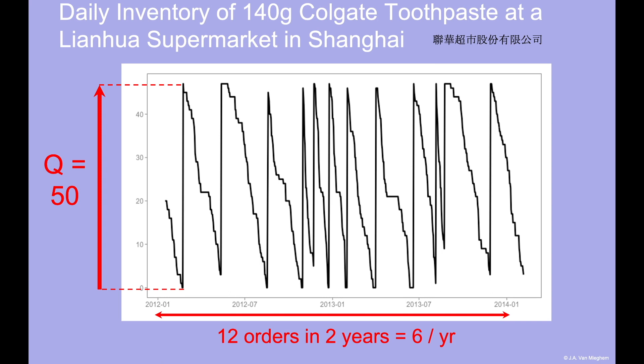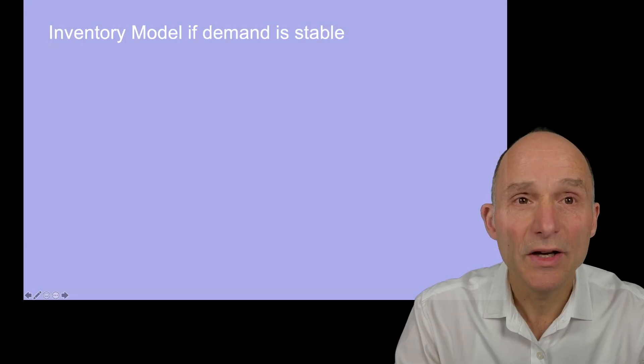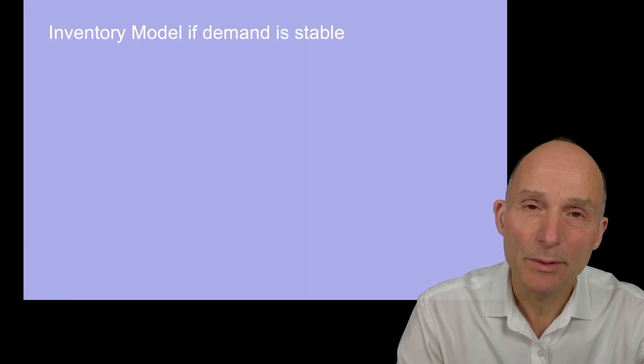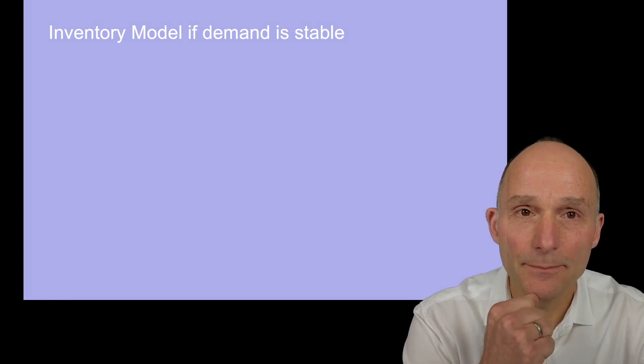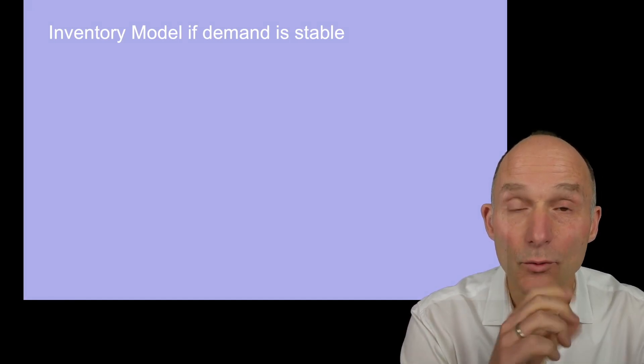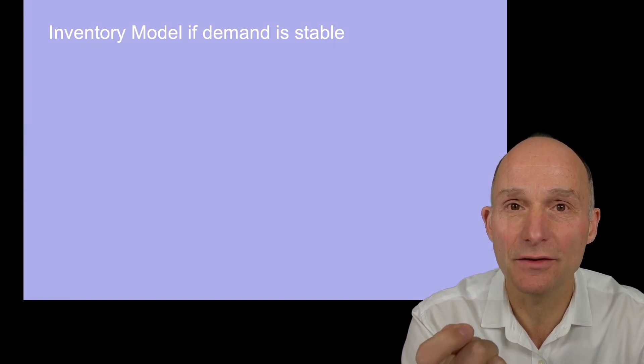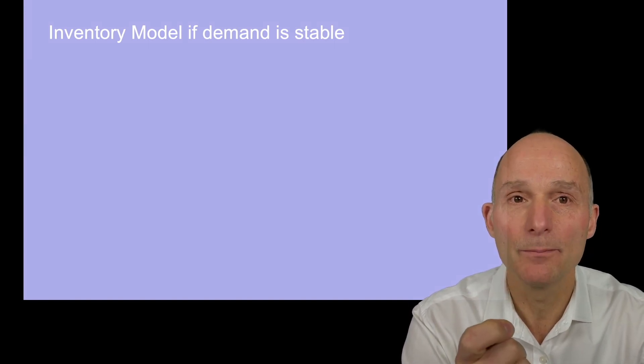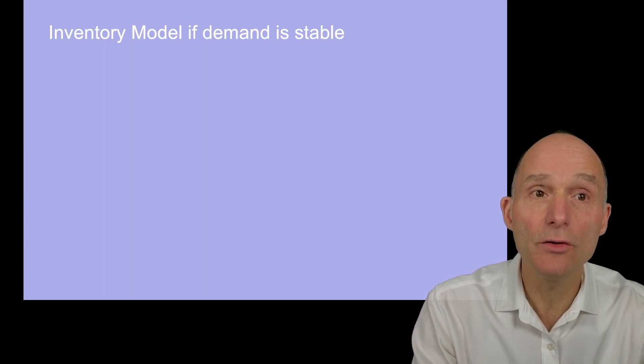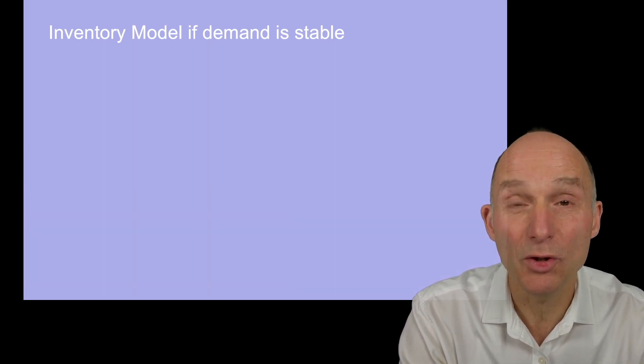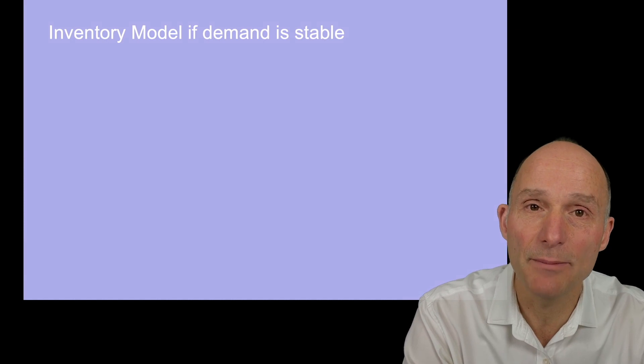There are about 12 replenishments in two years, which means that the order frequency is six times per year. To figure out the optimal order quantity, we must build a model of reality. The key assumption, which significantly simplifies this model, is that the demand rate for your product is constant and perfectly known. This means that the EOQ model only applies to mature products with stable demand.